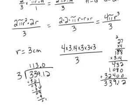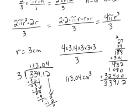Bring down the 1. How many 3s in 1? There aren't any. Bring down the next number. How many 3s in 12? There are 4. 3 times 4 is 12. Subtract and get 0. So the volume of my sphere is 113.04 centimeters cubed.